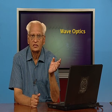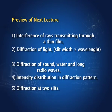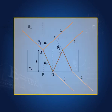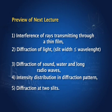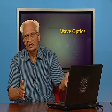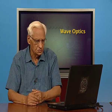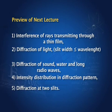In the next lecture, we continue with the wave nature of light. We will study interference of rays transmitted through a thin film — interference between transmitted waves 3 and 4, not just reflected waves 1 and 2. We will also study the phenomenon of diffraction, or bending of light, give examples in other wave phenomena such as sound and water waves, and find the intensity distribution in the diffraction pattern.